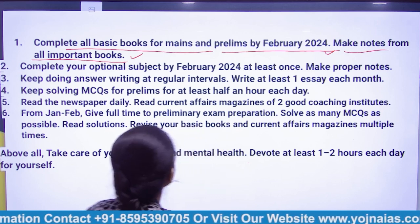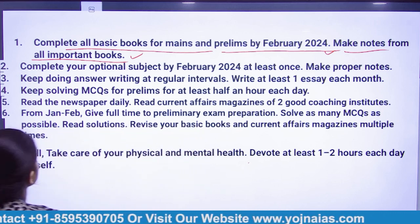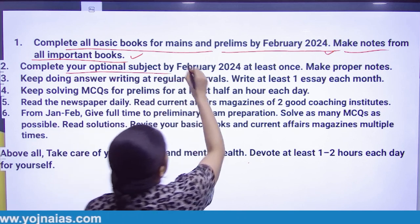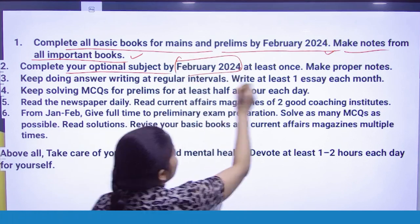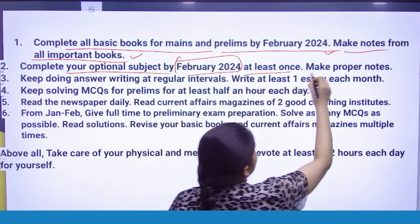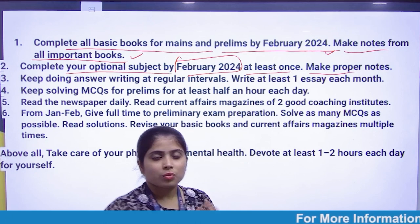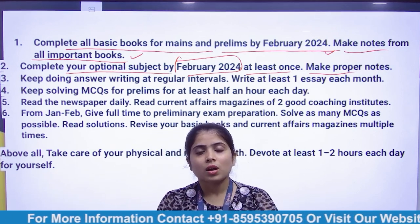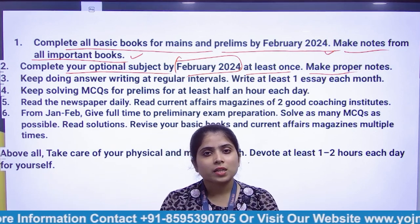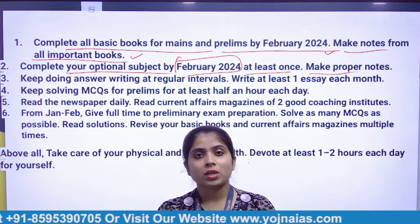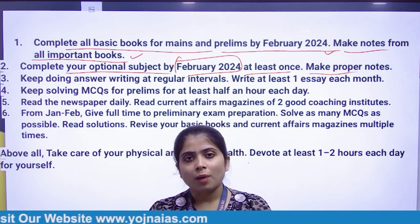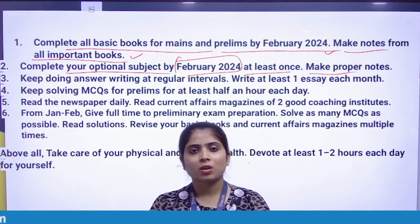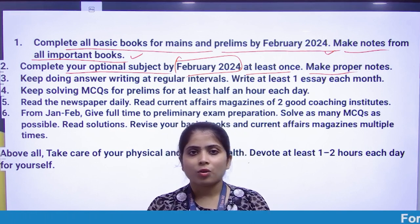Second tip: complete your optional subject by February 2024, at least once, and make proper notes. For the 2024 exam, if you are a student who has not yet started, you should start this month. You still have about 4 months to cover it.